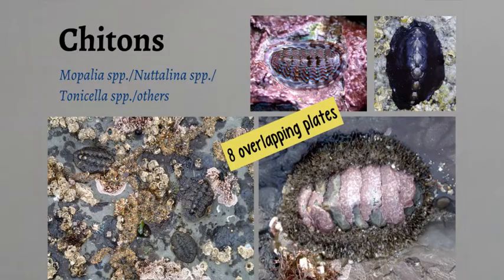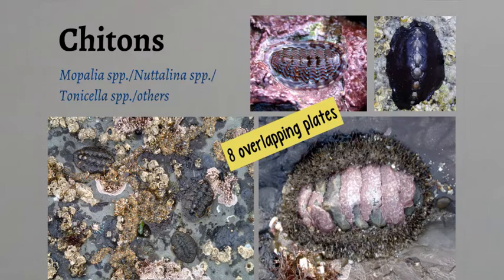Chitons are also mollusks and they are oval in shape and have eight separate overlapping plates and usually a fleshy skirt. The plates allow them to fit into small nooks and crannies on rocks to hide. They can be many different colors and are easily overlooked because they are small and well-camouflaged.